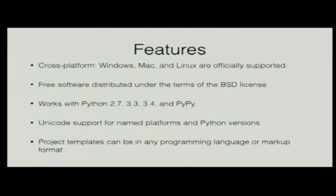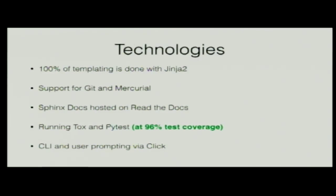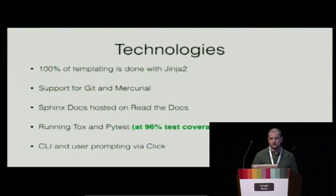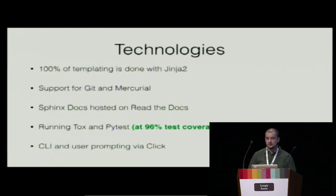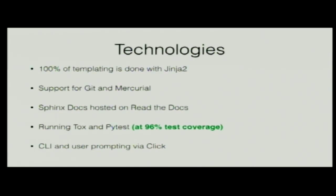One of the best things about Cookiecutter is that it works on all platforms: Windows, Mac, and Linux, and supports Python 2.7, 3.3, 3.4, and also PyPy. We managed to add Unicode support for each of those platforms and Python versions. Cookiecutter uses Jinja2 for the whole template engine, and we support both Git and Mercurial. Almost 100% of our code base is covered by pytest tests, and we leverage tox for testing all the different environments and Python versions.